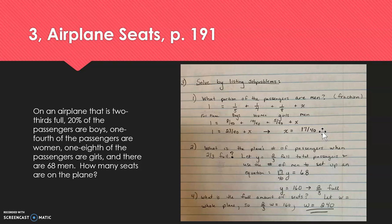So what we would like to know now is, what is the plane's number of passengers total when it's two-thirds full? Well, if we know that the number of men is 68 and the portion that they take up for all of the passengers on this two-thirds full plane is 17/40ths, we know that 17/40ths times all of the passengers on the two-thirds full plane would equal 68. So we go ahead and we solve that equation, and we get that 160 passengers are on board this plane currently.